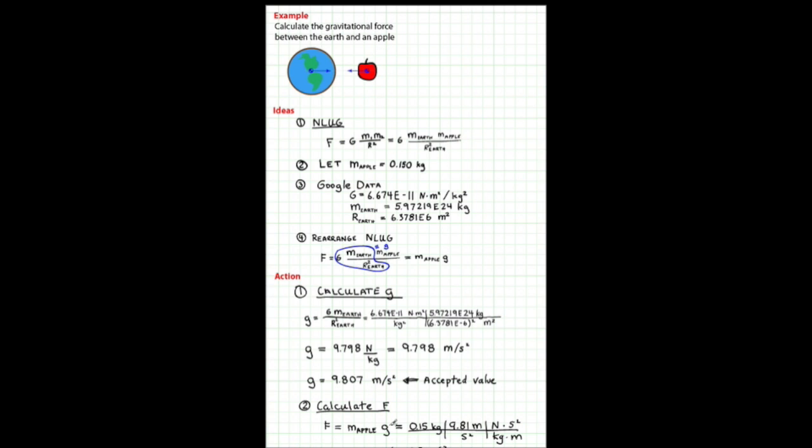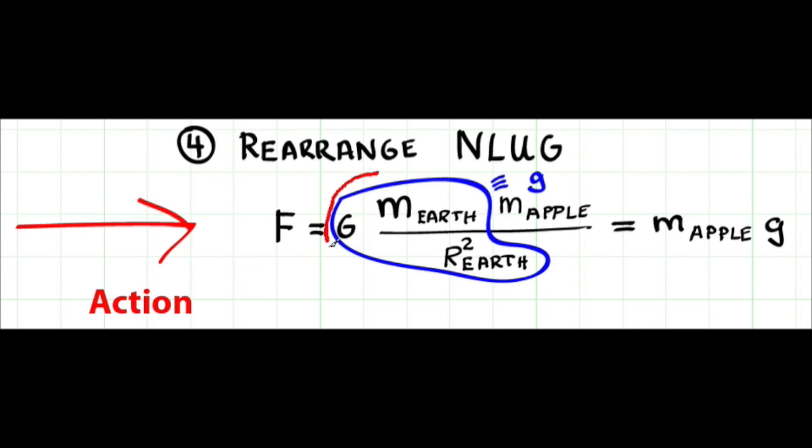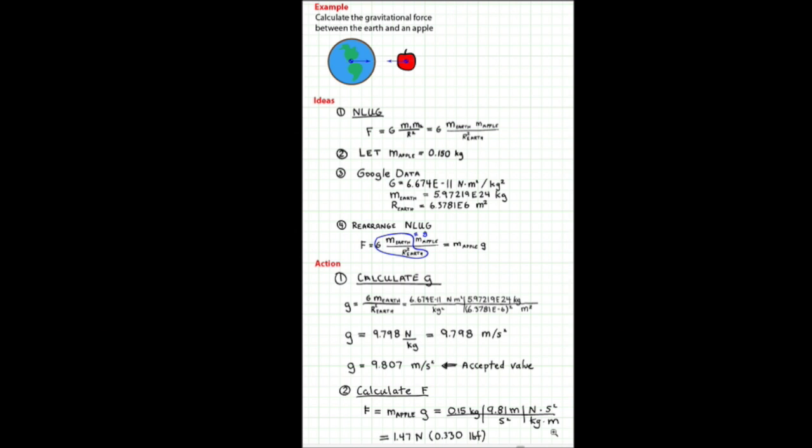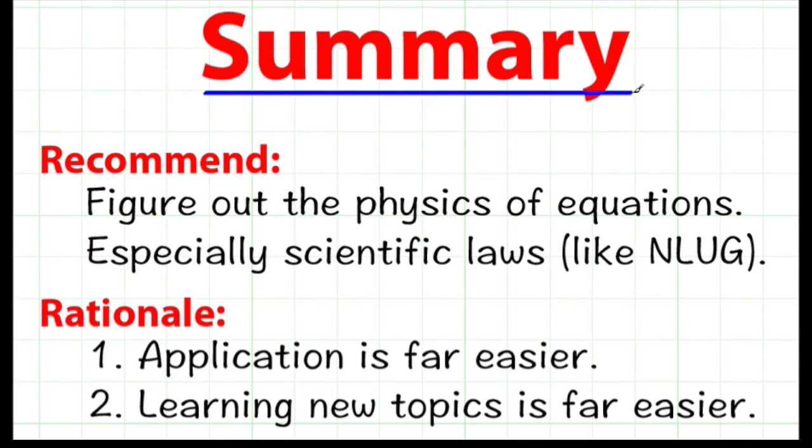I've zoomed out so you can see the whole calculation. The point of this example is that any time you do a problem like this, the gravitational force between the Earth and any object, this group of terms right here will always end up being a constant. Let me zoom back out so again you can see the whole example.